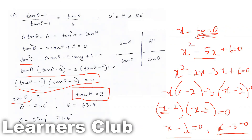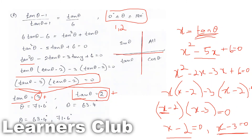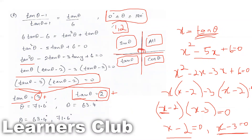Now to find θ: both values are positive, and the range 0 to 180 degrees covers the first and second quadrants. In the first quadrant sine, cos, and tan are all positive. In the second quadrant only sine is positive. In the third quadrant only tan is positive, and in the fourth cos is positive. Since both tan values are positive and the range is 0 to 180 degrees, the answers must fall in the first quadrant only.